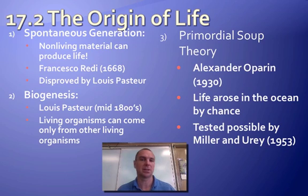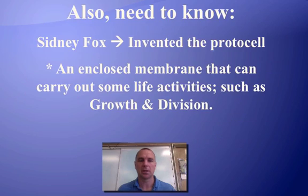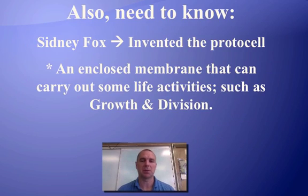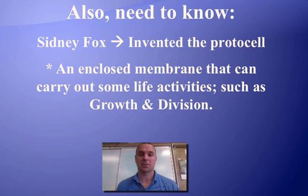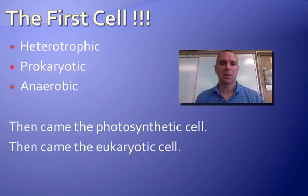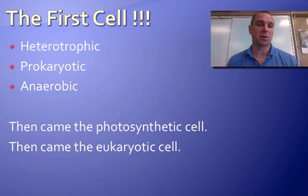Stanley Miller and Harold Urey in 1953, in the laboratory, put the same elements into a flask, added electricity, and created all 20 amino acids. They didn't make life, but they showed it was possible — so it's still a theory. Another important figure is Sidney Fox, who invented what's called a protocell. A protocell does most of the things a living cell can do, such as grow and develop, but it can't carry on all cellular activity, so it's not considered living.